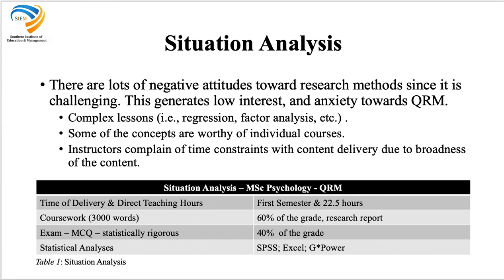If you go through the table I have given here, this is a module students usually take up in their very first semester in the MSc program, which only has 22.5 direct hours. There is a coursework where students are required to write a full research report based on data given — that is 60% of their total grade. They also have an exam paper which is statistically rigorous with MCQ questions, accounting for another 40%. To complete the coursework, students have to do statistical analysis using SPSS, Excel, and G*Power. The problem is sometimes students join this program from fields other than psychology, so they don't have the required statistical understanding, which hinders their interest in following the QRM course.